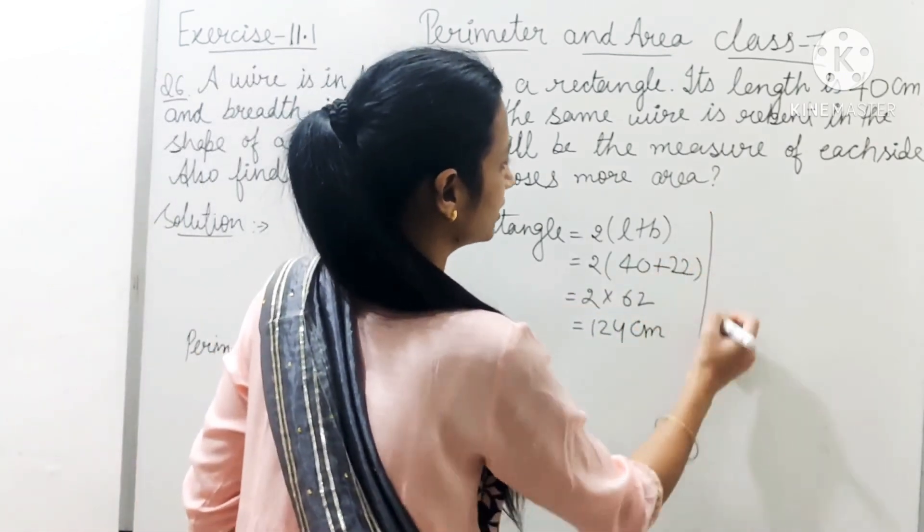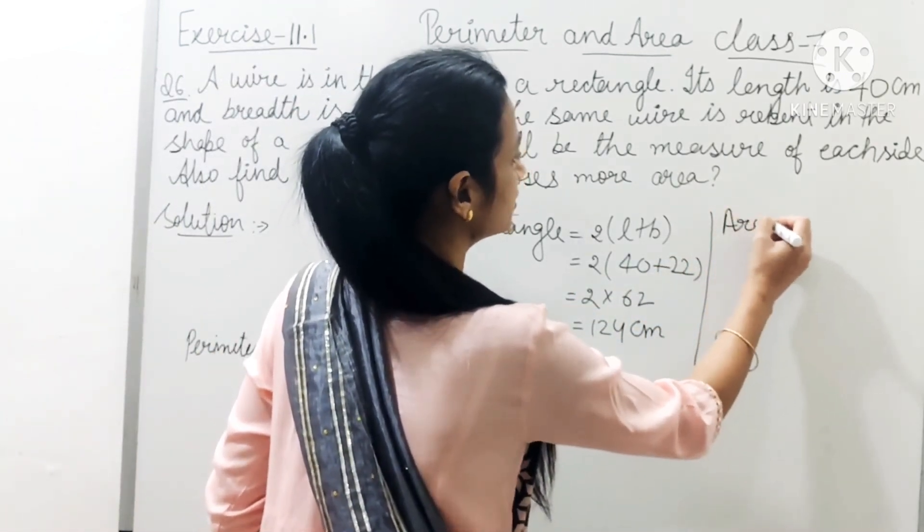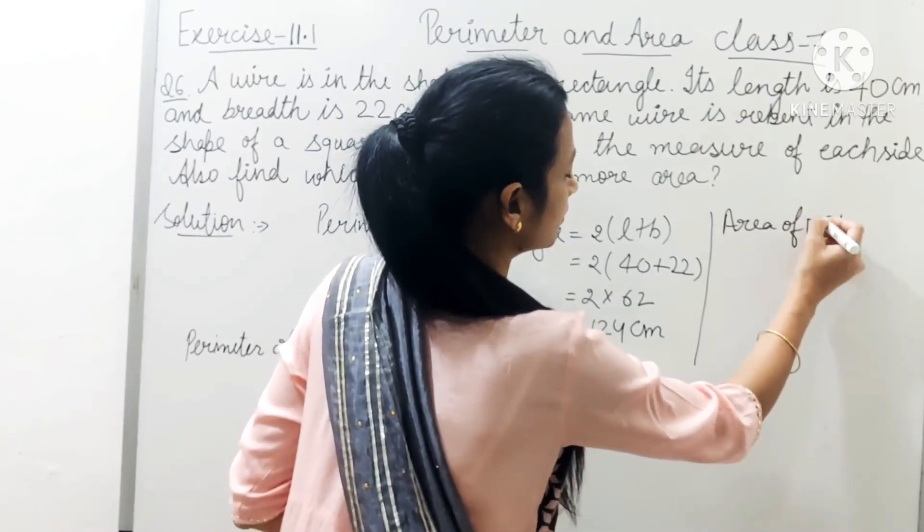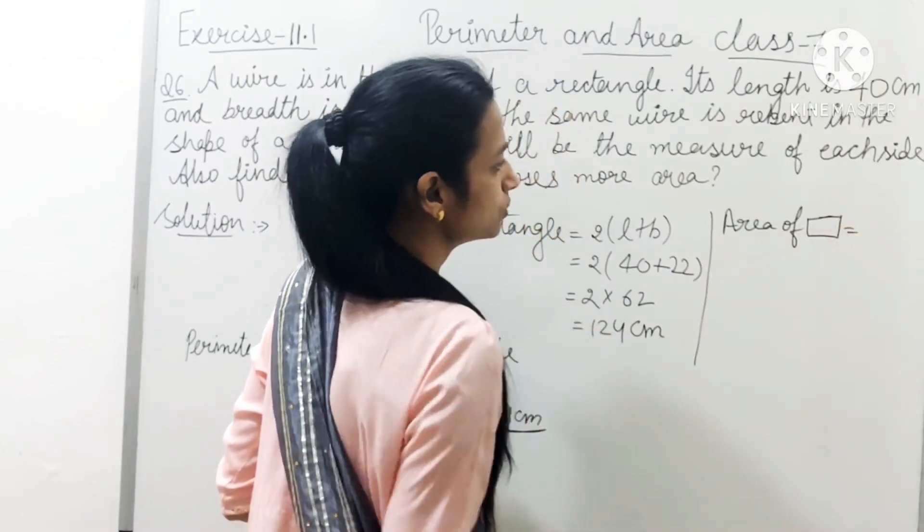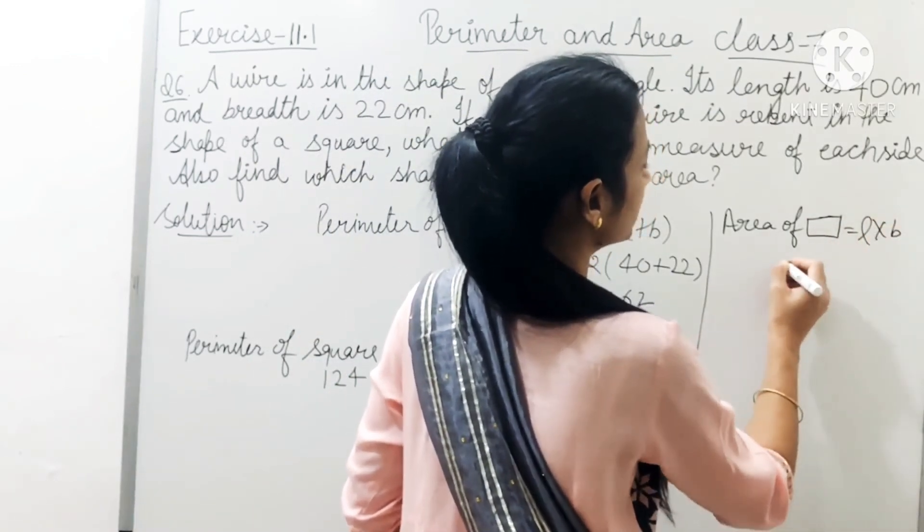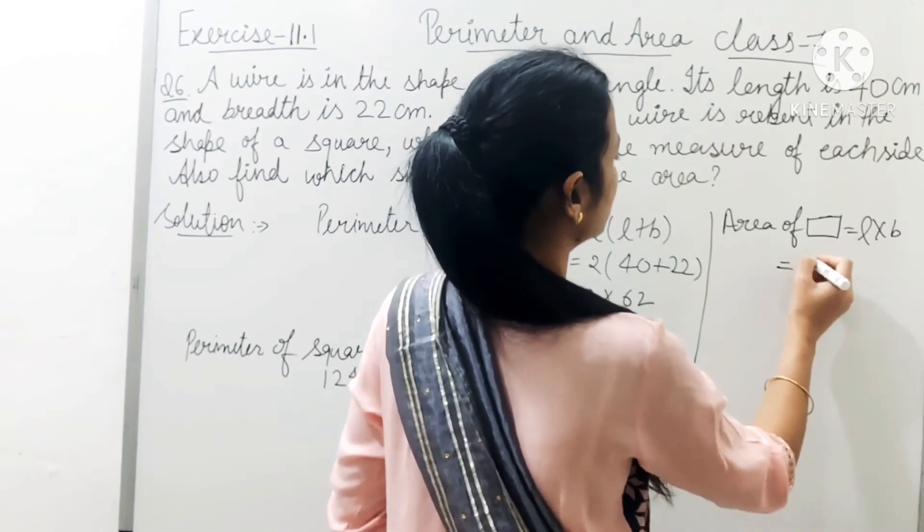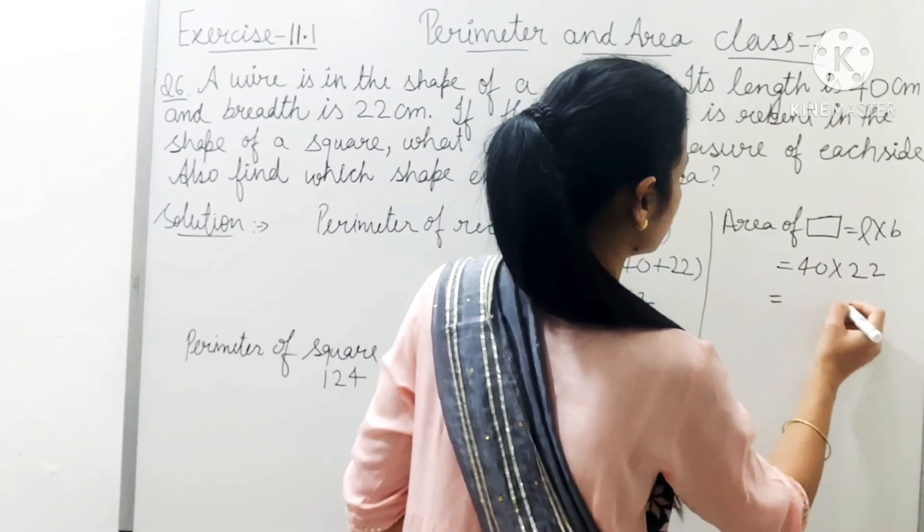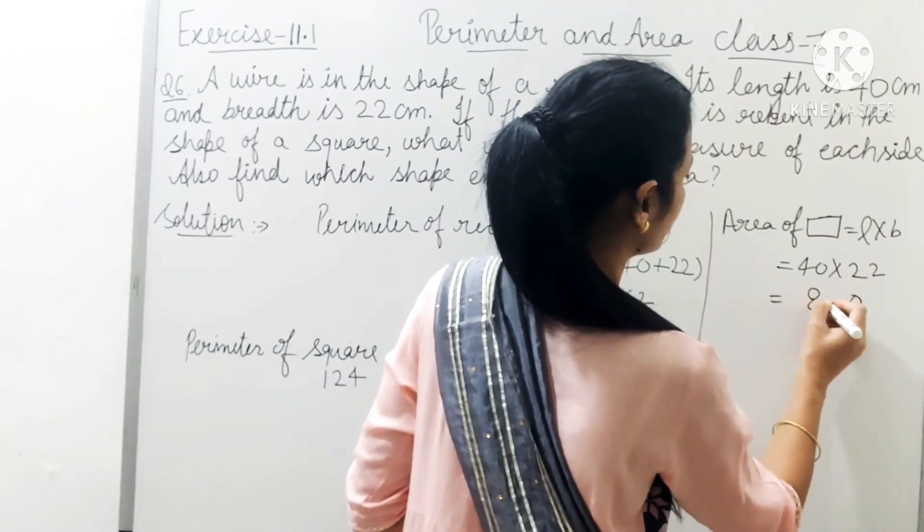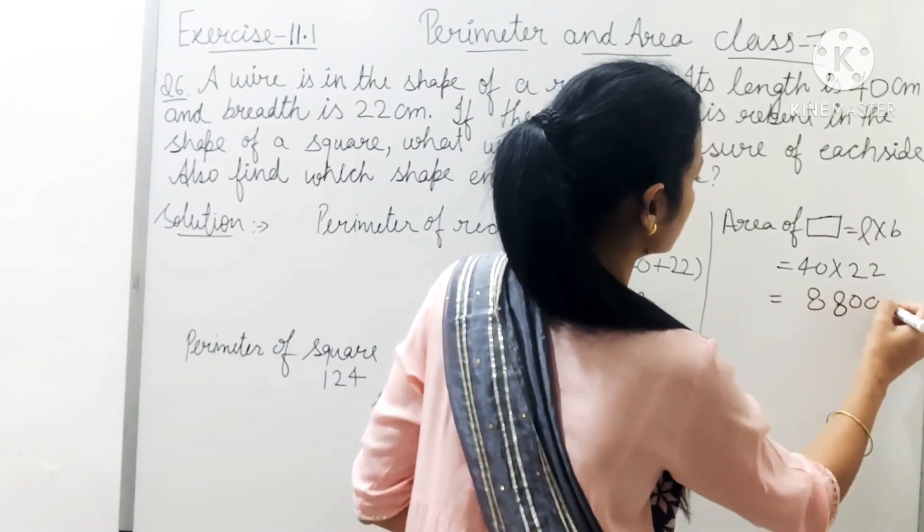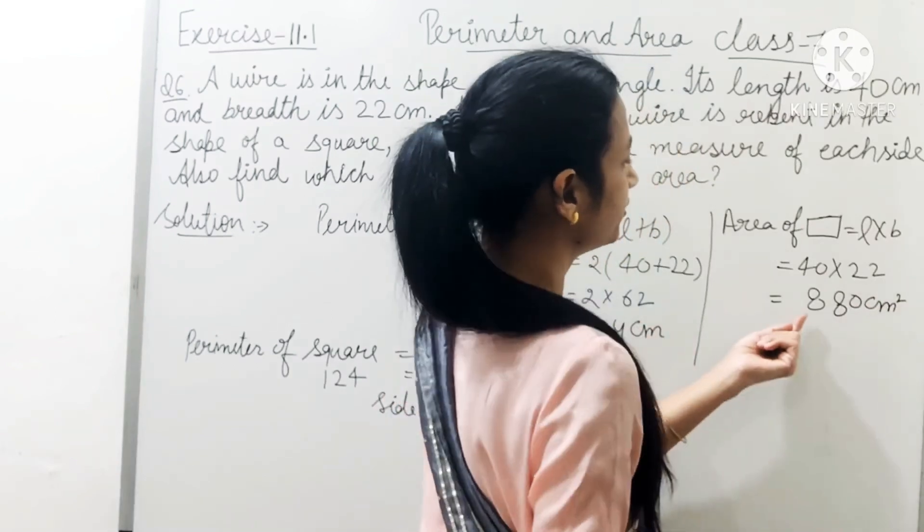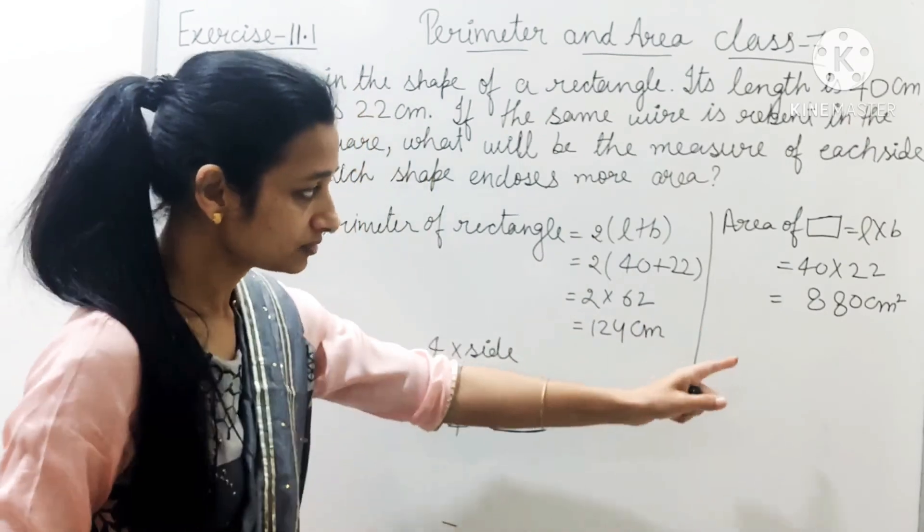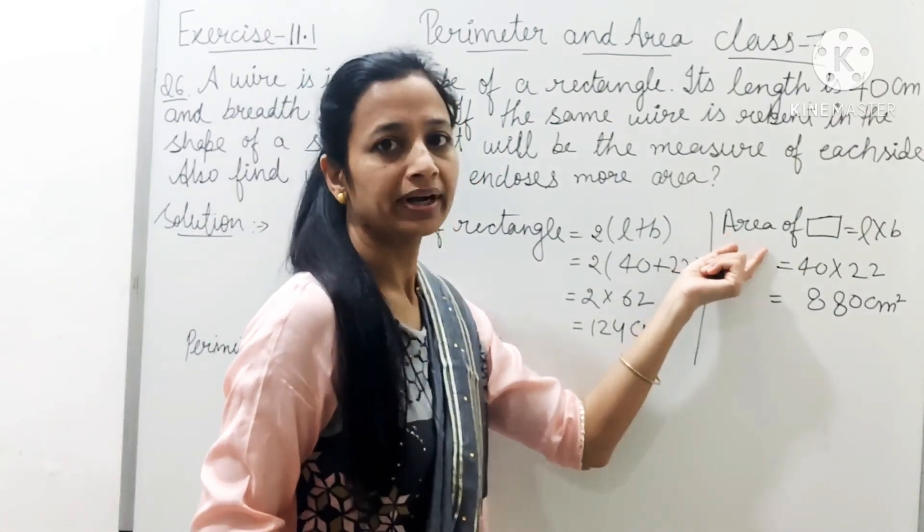Area of rectangle equals to length into breadth. So length is 40 and breadth is 22. From here we get 880 centimeter square. This is the rectangle's area.